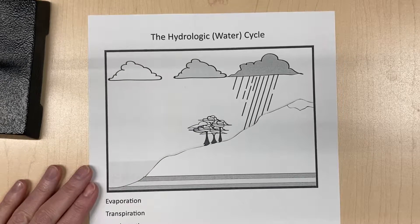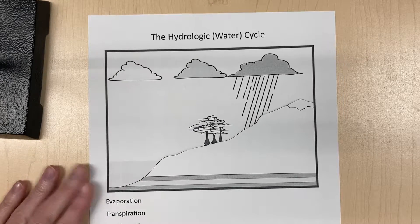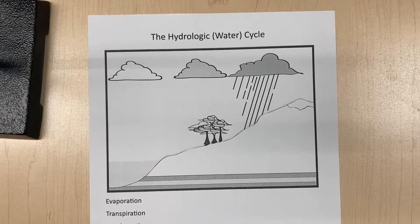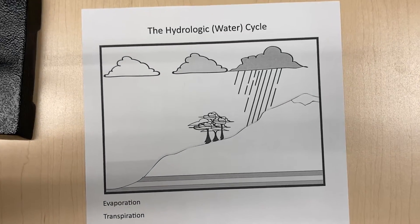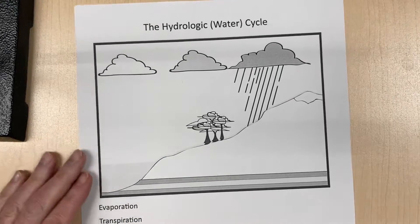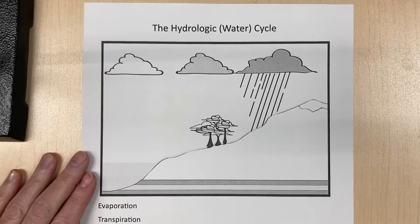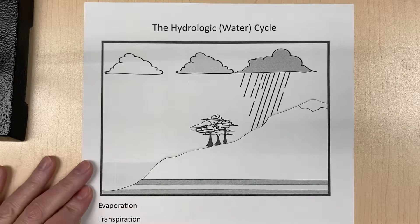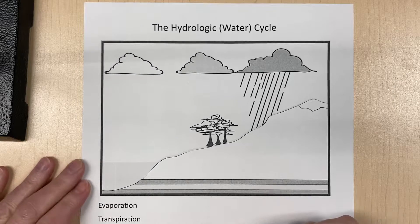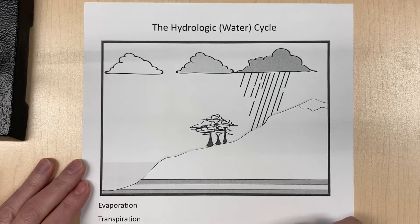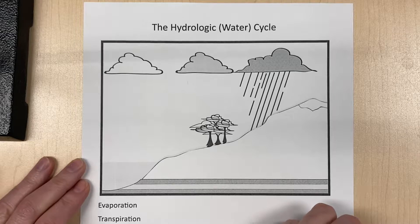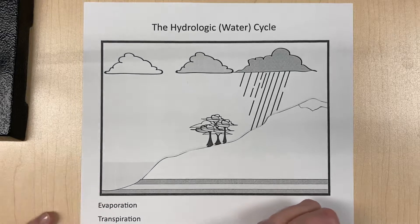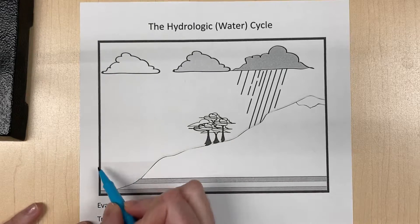The water cycle diagram. Get ready to draw all over this diagram to help you understand the water cycle. So we have some basic parts of the water cycle. First thing let's talk about is the ocean here.